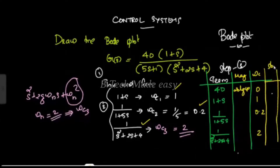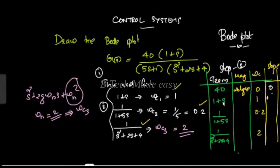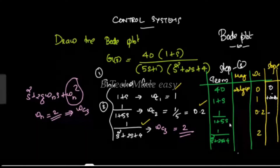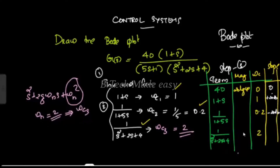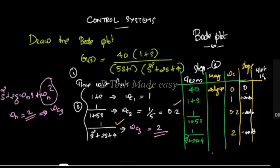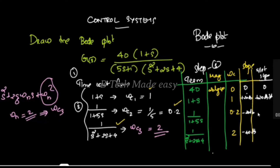We will start with slope. For the numerator term (1 + s), the slope contribution is +20 dB/decade. For the denominator terms, the slope is −20 dB/decade. The combined slope at different frequency regions: initially 0 dB/decade, then after adding +20 and −20, the net is 0 dB/decade.